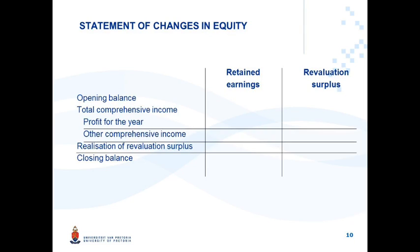In the Statement of Changes in Equity, you will have a revaluation surplus column as a separate equity item. Current year movements through OCI are transferred to this column. Where a surplus is realized during the current period, a portion is transferred from the revaluation surplus to retained earnings. This is a specific new line item directly in equity — you are not allowed to transfer this realization through Profit or Loss or Other Comprehensive Income.